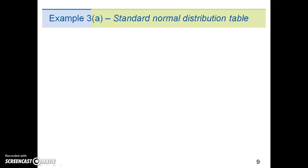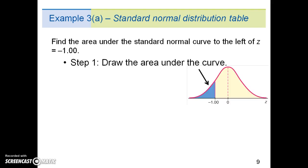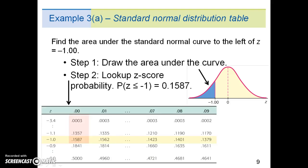Example 3a shows us how to use the standard normal distribution table in the back of the book. Let's say we want to find the area under the standard normal curve to the left of z = -1.00. Our step one is to draw the area under the curve so we know what we're looking for. Step two is to look up the z-score probability. This is the probability of z ≤ -1, which equals 0.1587. This normal distribution table is found in the appendix in the back of the book.